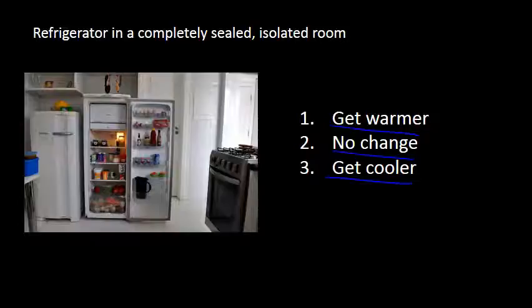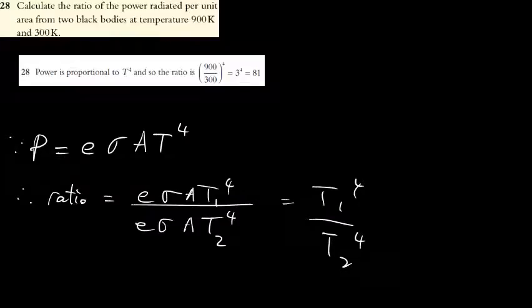Question 28 asks for the ratio of intensity between two blackbodies at different temperatures. Using the Stefan-Boltzmann equation P = eσAT⁴, since e, σ, and A are the same for both bodies, the only difference is temperature. Therefore the intensity ratio is (T₁/T₂)⁴ — not T₁/T₂ directly, but raised to the power of four.